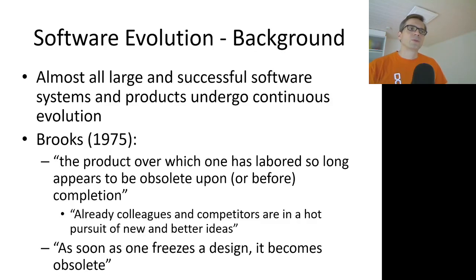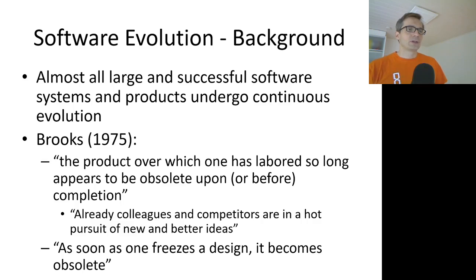Almost all large and successful software systems and products undergo continuous software evolution. This has been known for quite a while. Already in 1975, Brooks wrote that 'the product over which one has labored so long appears to be obsolete upon or before completion.'